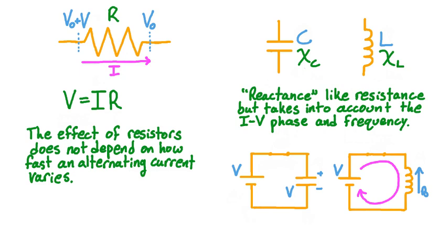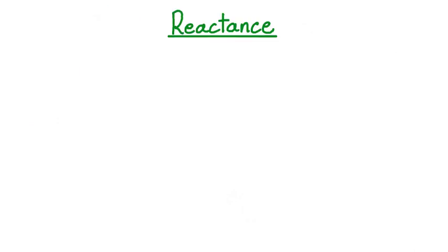As these examples illustrate, the ability of an electromotive force to drive current through a capacitor or an inductor can change. On the other hand, as we saw through Ohm's law, an electromotive force always has the same ability to drive current through a resistor. The changing effects of inductors and capacitors in a circuit will be the driving principle behind defining inductive and capacitive reactances. Let's start by working out the frequency dependence of inductive and capacitive reactance.